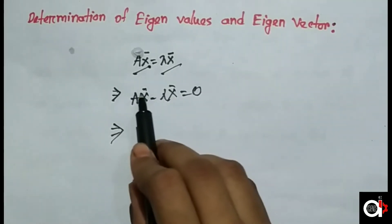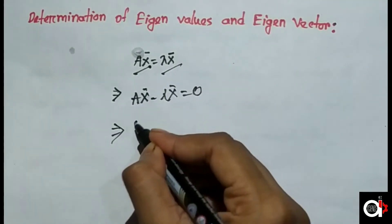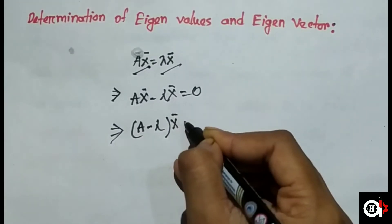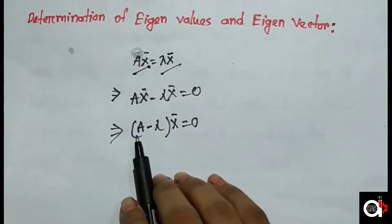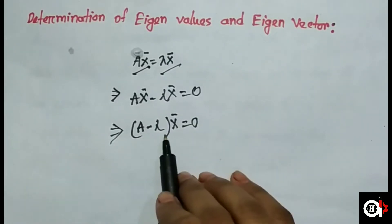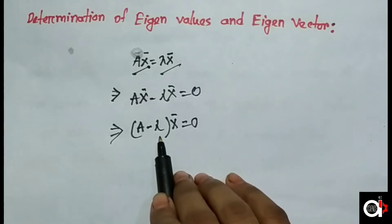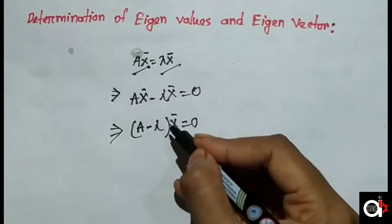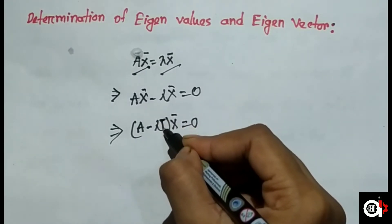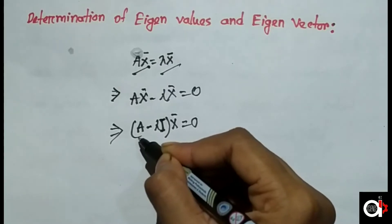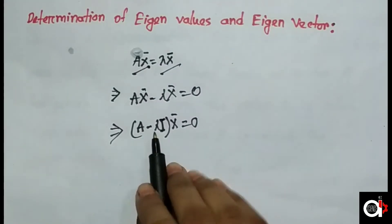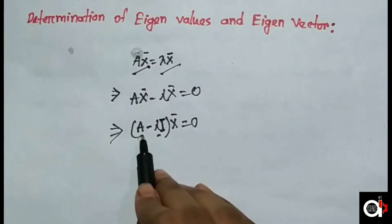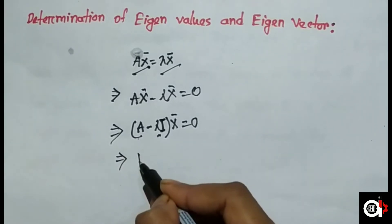Taking the same x vector common, we get (A minus λ) times x equals zero. Since lambda is a scalar and A is a matrix, we introduce the identity matrix I of the same order as A, so we write this as (A minus λI) times vector x equals zero.